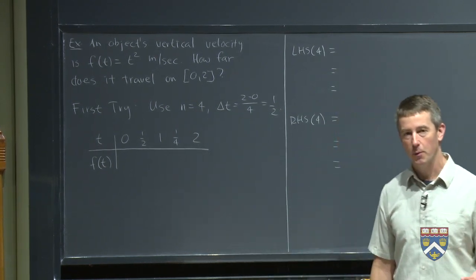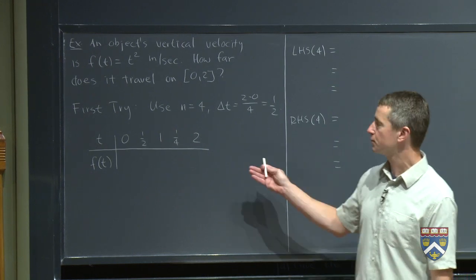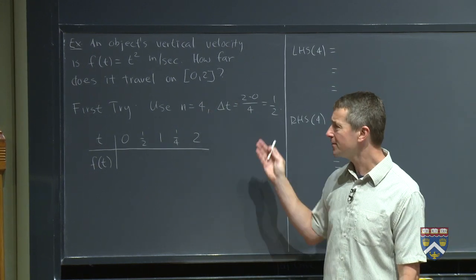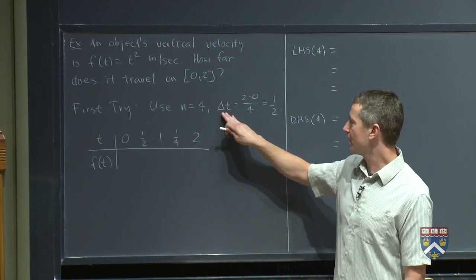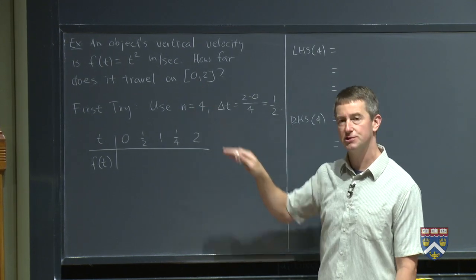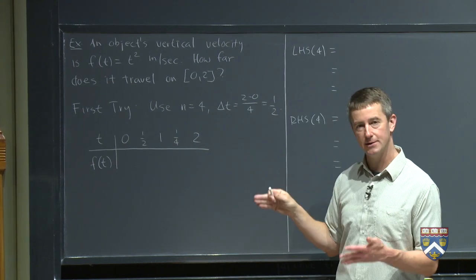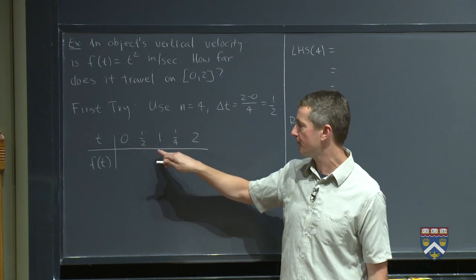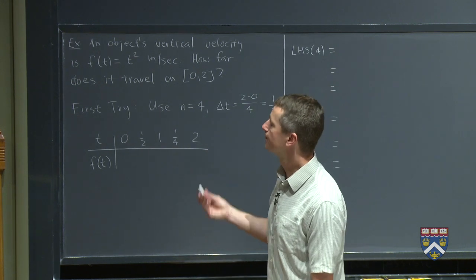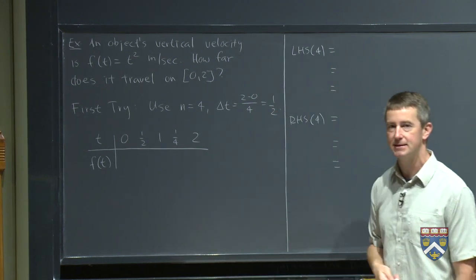So as a first try, we're going to build on what we already know how to do, namely use a Riemann sum. So just for convenience, let's suppose that we use four subdivisions again. We want to figure out what our delta t is. Well, our interval is two units long. Two minus zero units divided into four pieces should be one half. So my t value should be zero, one half, one, one and a half, and two.